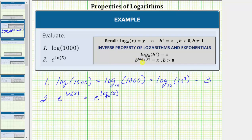We have b raised to the power of log base b of x equals x. So because we have base e here and it's raised to the power of log base e, this simplifies to five.